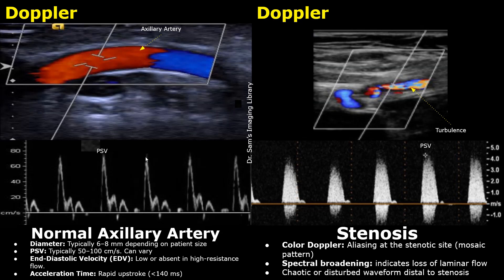In a significant stenosis, color Doppler can show mixing of colors at the stenotic site and immediately distal to it. This color mixing is not seen in normal cases. This appearance is termed a mosaic pattern and it indicates turbulence. In spectral Doppler, in severe cases of stenosis, the waveform can appear thick and has a blunt peak. This occurs from turbulent blood flow across the stenosis. This appearance is called spectral broadening.